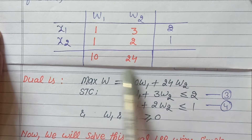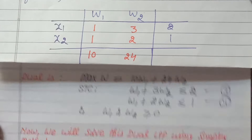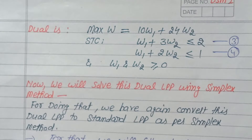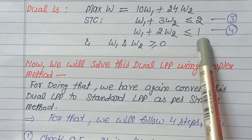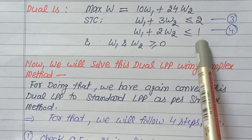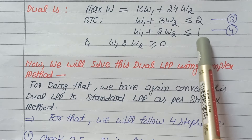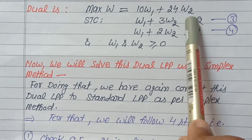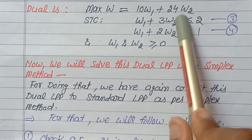To solve this dual using the simplex method, we first convert it into standard LPP form following four steps. Step one: check whether the objective function is maximization — it is, so no change needed. Step two: check whether the right-hand side elements of the constraint equations are non-negative — both 2 and 1 are positive, so this condition is satisfied. Step three: convert inequality symbols to equality.